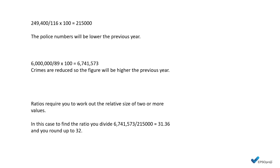So in this case, to find the ratio, you divide 6,741,573 by 215,000, which equals 31.36. Now we're looking at police officers here, so you need to round up the units to 32. So the correct answer is C: 1:32.